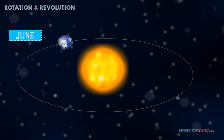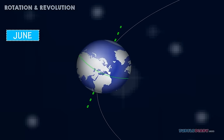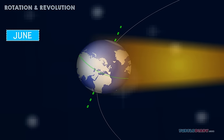In June, the northern hemisphere is tilted toward the Sun. It gets more direct sunlight. It's summertime in the northern hemisphere.